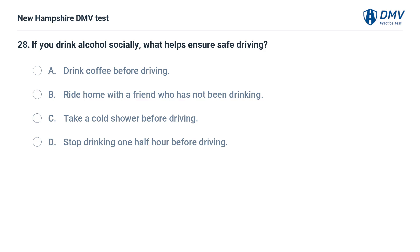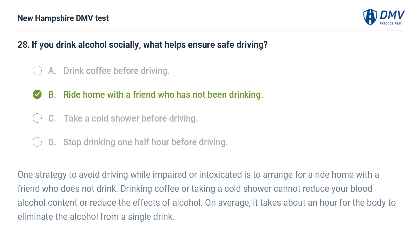If you drink alcohol socially, what helps ensure safe driving? A) drink coffee before driving, B) ride home with a friend who has not been drinking, C) take a cold shower before driving, D) stop drinking one half hour before driving. The answer is B. One strategy to avoid driving while impaired is to arrange for a ride home with a friend who does not drink. Drinking coffee or taking a cold shower cannot reduce your blood alcohol content. On average, it takes about an hour for the body to eliminate the alcohol from a single drink.